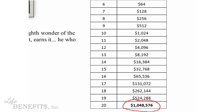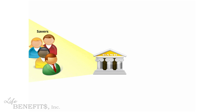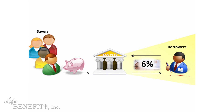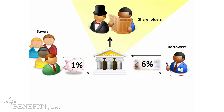Now of course, nobody sees 100% compounding interest in the real world, so let's look at a realistic example. In the banking equation, there are savers that put money into the bank. The bank doesn't let this money just sit in the vaults — it turns around and loans it out to borrowers. Let's say a borrower is being charged 6% on a business loan. The bank takes some of the interest to pay maybe 1% back to the savers, and the rest, after covering operating costs, goes to the shareholders who put up the capital to start the bank.